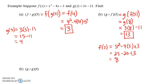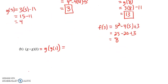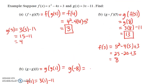Notice this one is g circle g of 1 — we're putting the function g inside of the function g, so this is g of g of 1. We first need to find g of 1. G of x is 3x minus 11, so g of 1 is 3 times 1 minus 11, that's 3 minus 11, which is negative 8. So g of g of 1 is like g of negative 8, which is 3 times negative 8 minus 11, that's negative 24 minus 11, which is negative 35.